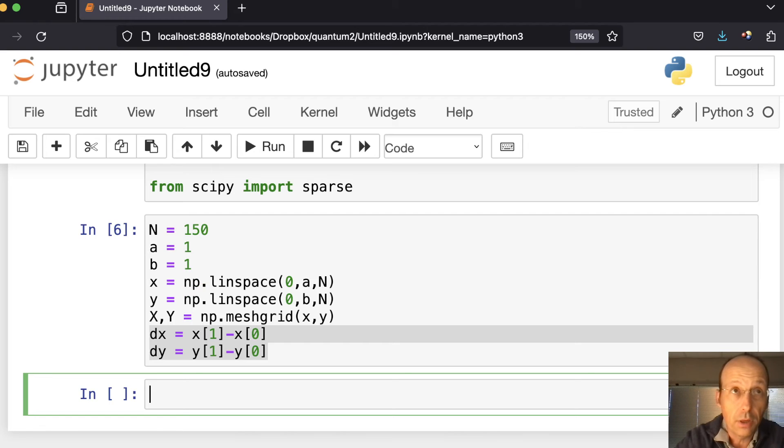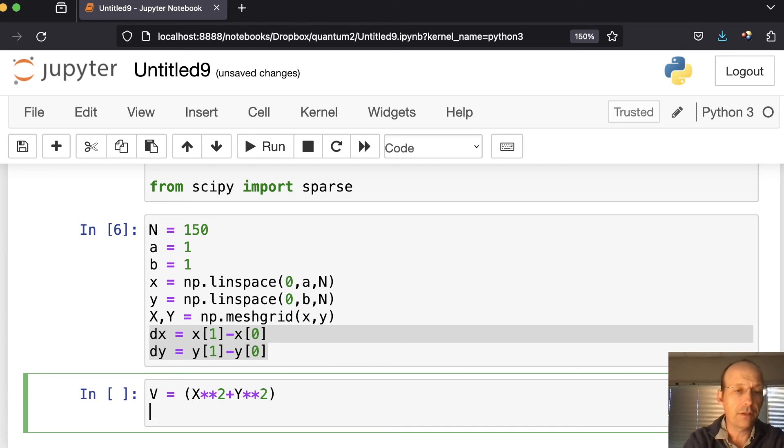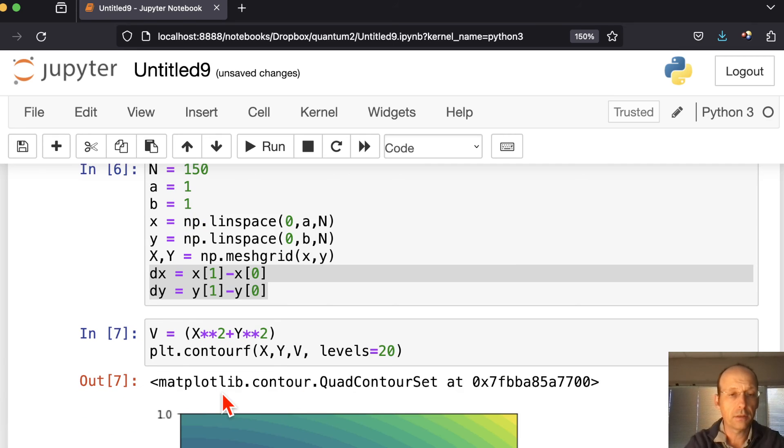Now I need a potential. Let's do this first. Let's make my potential. Let's make a simple harmonic potential. That's pretty easy to do. So that will be v equals x squared plus y squared. And let's just plot that. plt.contour, which I always misspell, x, y, v, levels equals 20. And there you go.